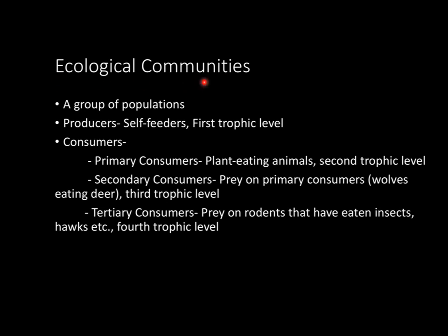Now let's look at ecological communities. A community is basically just a group of populations. Let's start with producers — think of a producer as a plant, something that's a self-feeder. Those plants exist on the first trophic level. There are next three different levels of consumers. Primary consumers — think of that as a plant-eating animal — and they exist on the second trophic level.